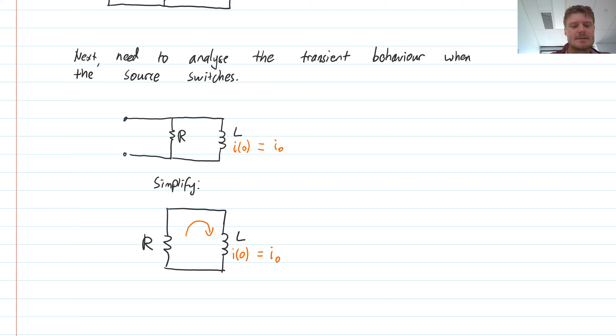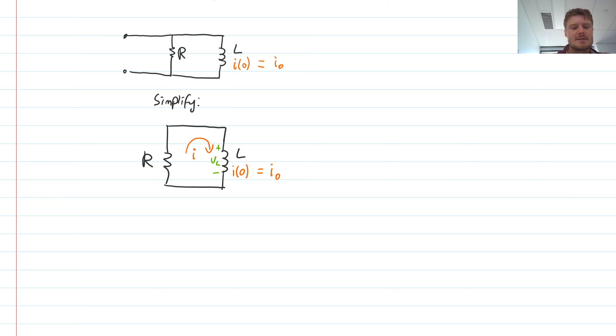And we would like to analyze what is the current in this loop. And also we should define a voltage across our inductor. So how do we analyze this circuit? Well, same kind of methods as we have previously been using. So here we have a loop. So let's use Kirchhoff's voltage law around this loop.